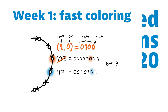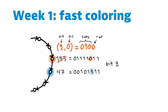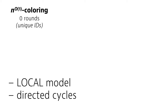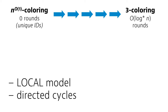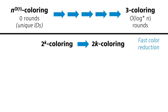Hi everyone! Already in the first week of this course, we saw that in the local model, it is possible to color the directed cycle with three colors in log* many rounds. We can start with the unique identifier files, which form a coloring with a polynomial number of colors. Then we repeatedly reduce the number of colors. In one round, we can reduce the number of colors from 2 to the power of k colors to only 2 times k colors. And if we repeat this for log* many times, the number of colors will be a small constant.